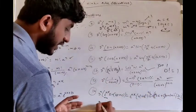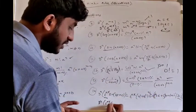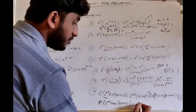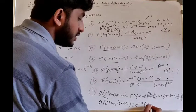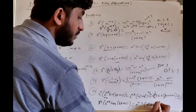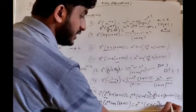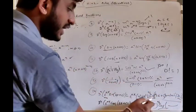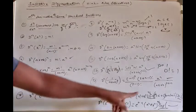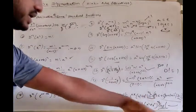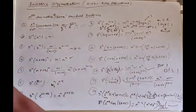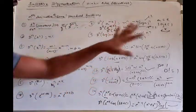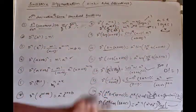Similarly, the nth derivative of e^(ax) · cos(bx+c) uses the same formula: e^(ax) · (a²+b²)^(n/2) · cos(bx + c + n·tan⁻¹(b/a)). The only difference is that sin is replaced by cos. These are the standard functions for nth derivatives. I will explain the problems in the next video.